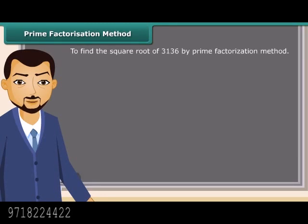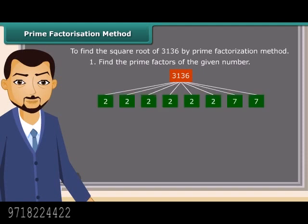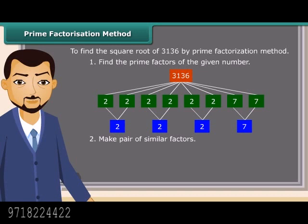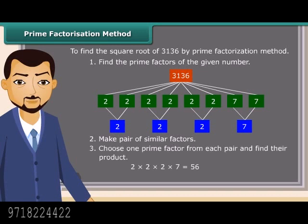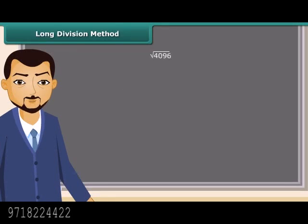Now we will try to find the square root of a number by the prime factorization method by following some steps. First, find the prime factors of the given number. Next, make pairs of similar factors. After that, choose one prime factor from each pair and find their product. The product thus obtained is the square root of the given number.